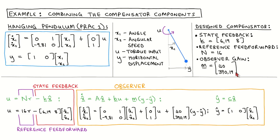We will first look at the structure of the full compensator and then look at the behavior of the plant and full compensator. The compensator is described by the control law and the observer equations. Let's review them first and then draw the corresponding block diagram.